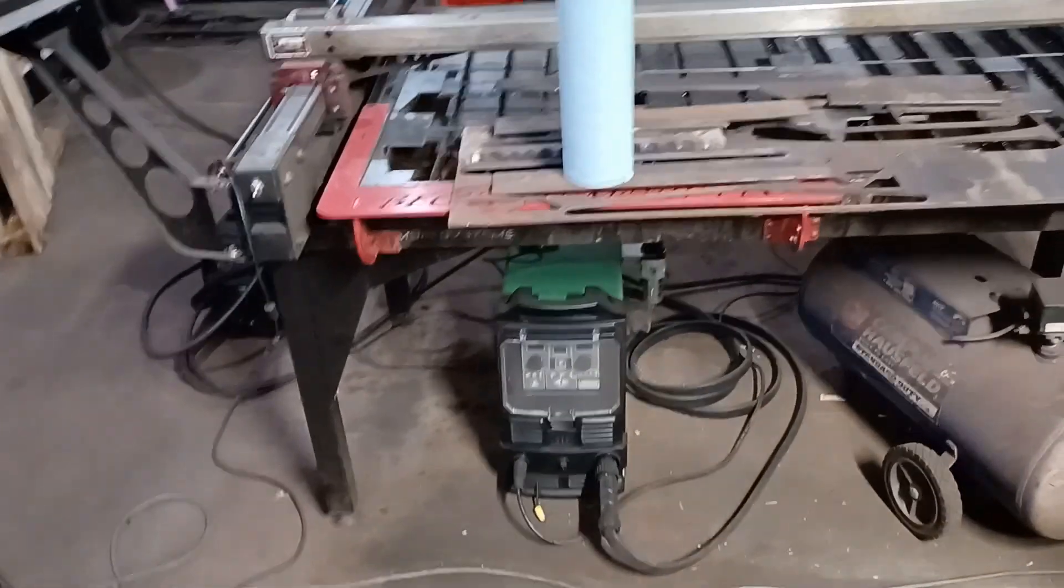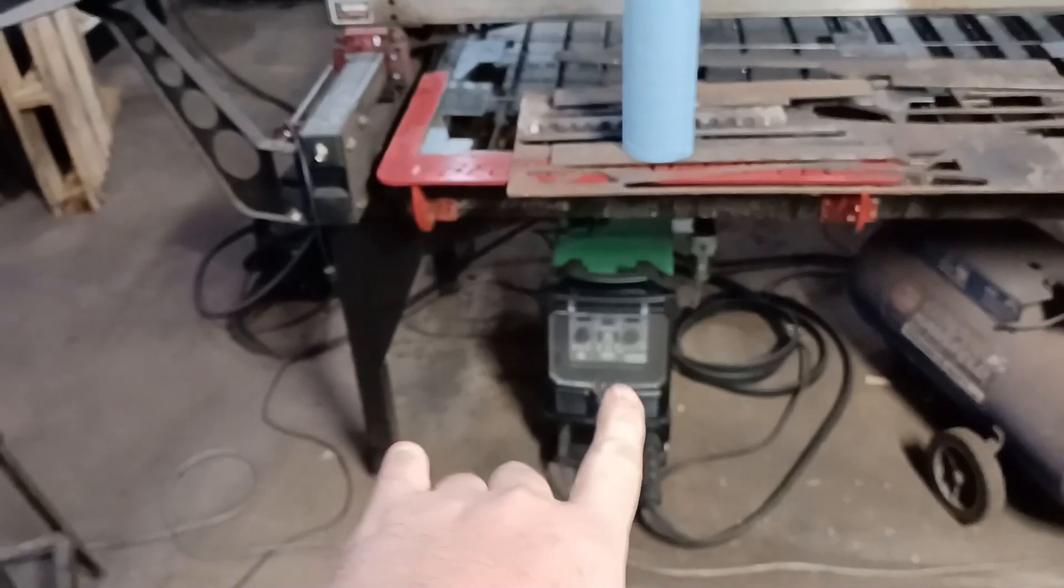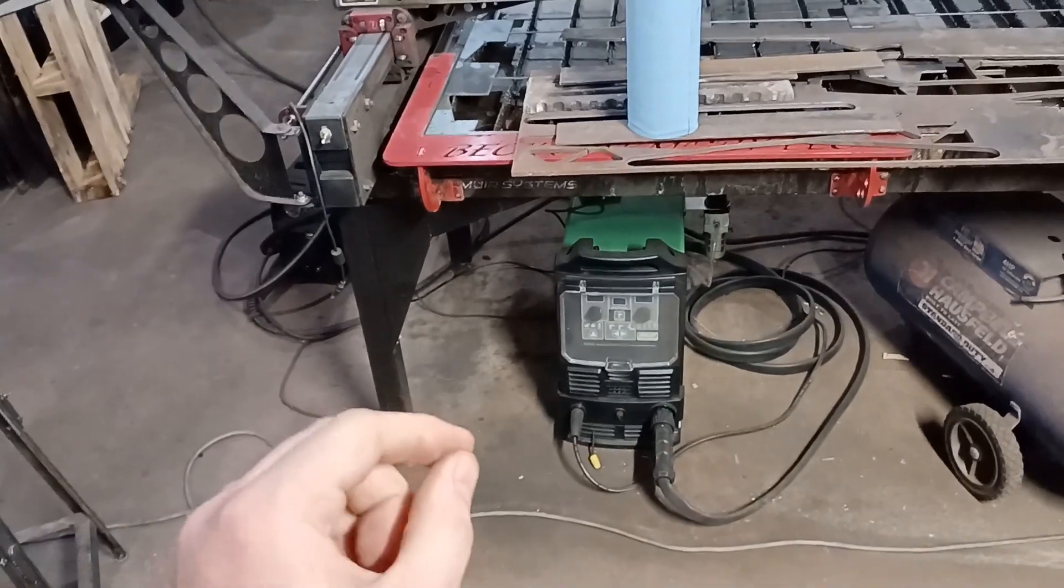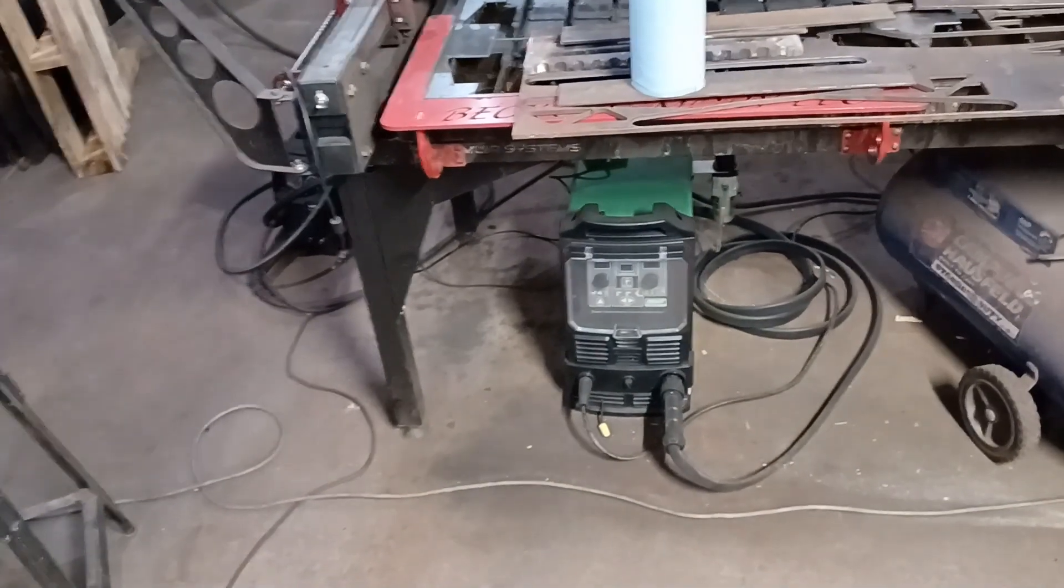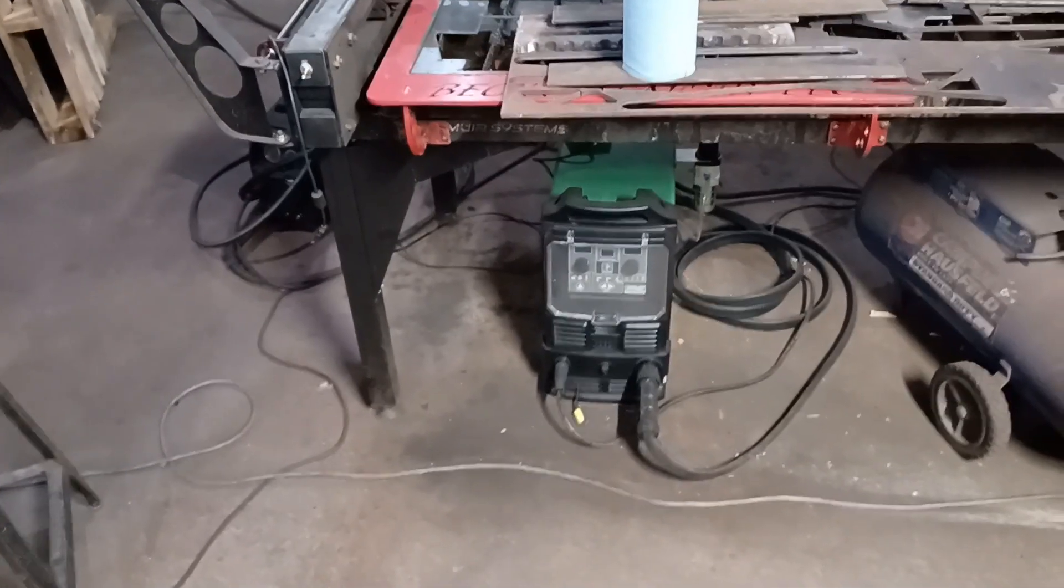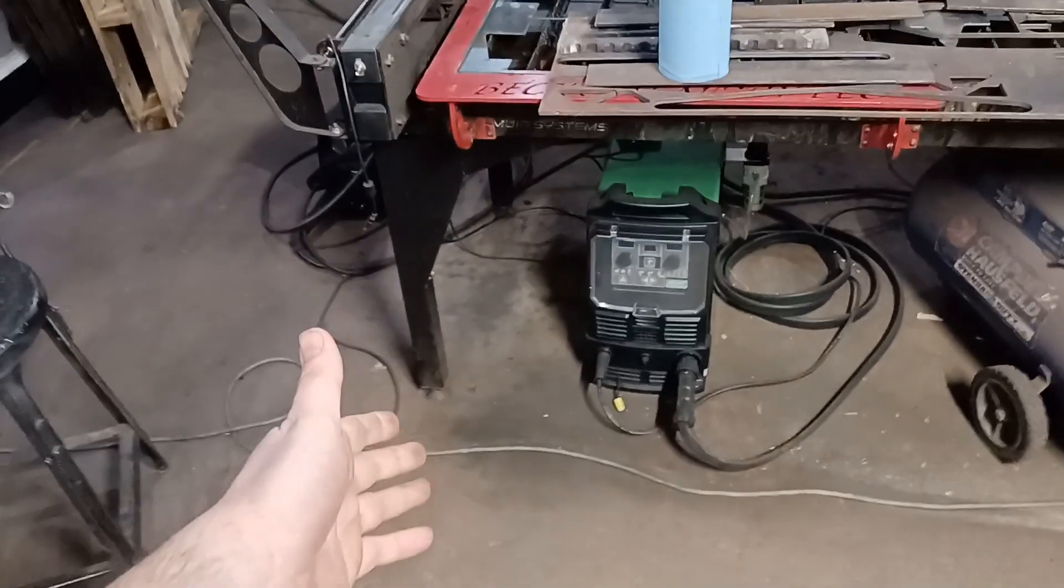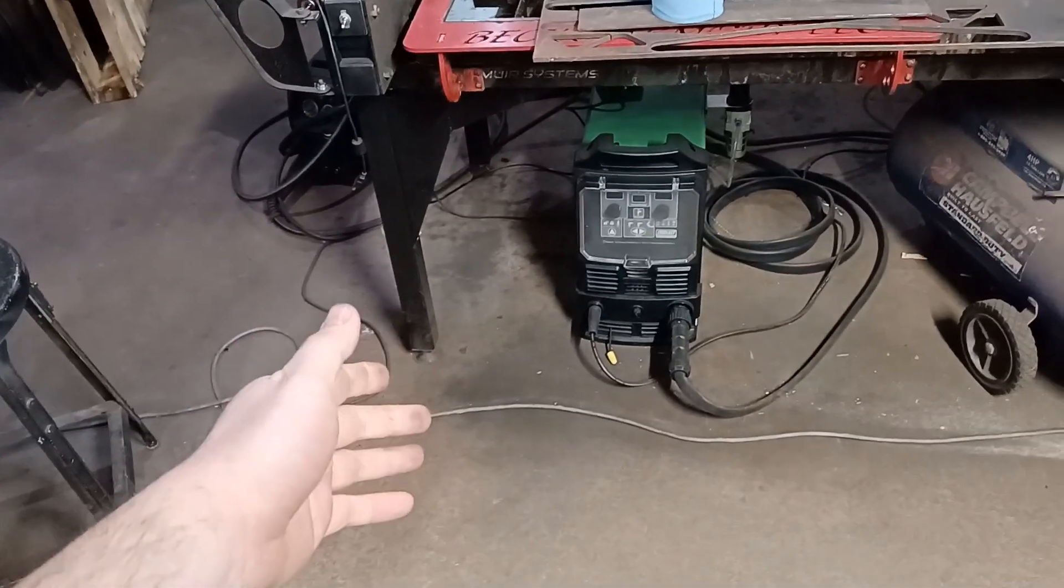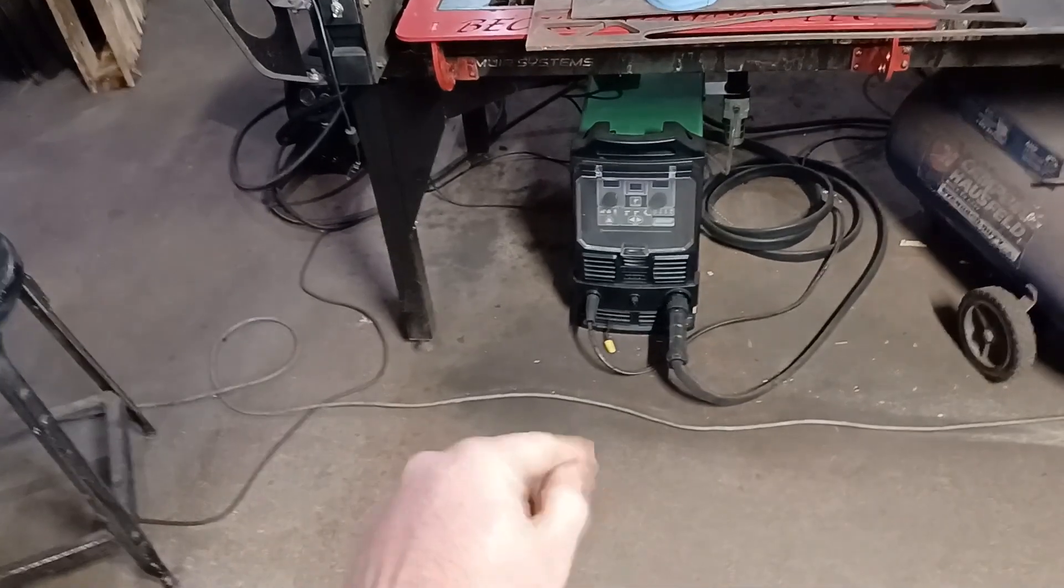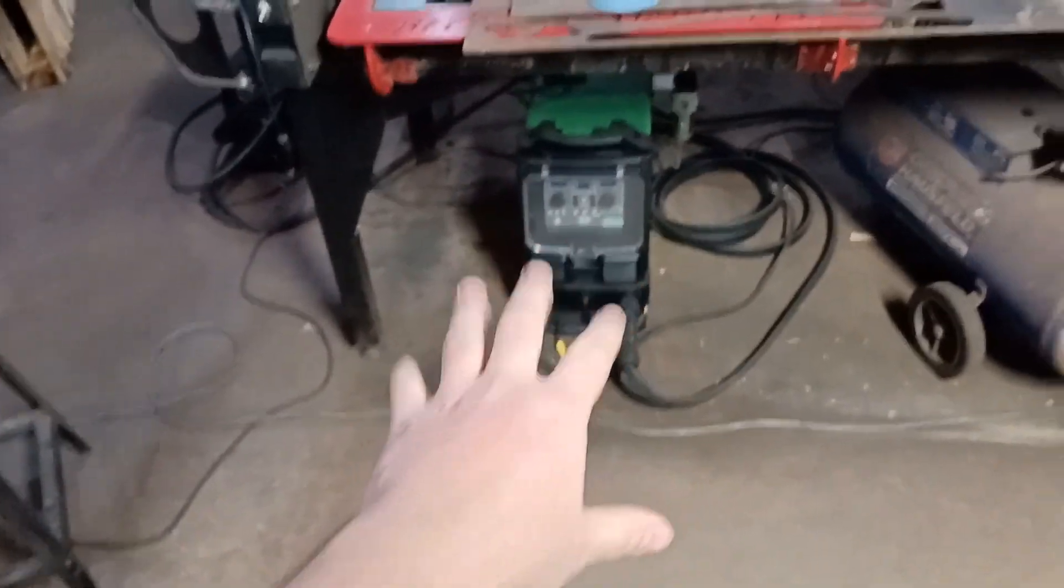It comes with 1.2 millimeter consumables. Those are for 60 to 70 amps. If you want to run the full 85 amps, you have to get the 1.3 millimeter tips. If you want to go all the way down to 30 amps, they have 0.9 millimeter tips. So they have lots of different tips that come with this.